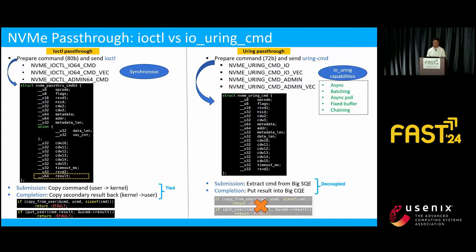Looking at the comparison: the left-hand side shows the command structure and opcode for ioctl pass-through, while the right-hand side shows the same for io_uring pass-through. For ioctl pass-through, completion immediately follows submission — they are tied together, making it synchronous. During submission, the kernel copies 80 bytes of command from user space into kernel memory, and during completion it copies the result back. For io_uring pass-through, completion is decoupled from submission, and both the copy-from and copy-to user space are avoided because we use big SQE and big CQE, which are already shared with user space. That's why there is no separate result field in the io_uring command structure.